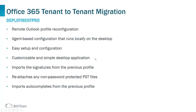The customizable desktop application is automated to recreate the Outlook profile. All users have to do is enter their credentials. You can upload your company logo for use in the Deployment Pro wizard. Enter a custom message to display in the wizard. The wizard also imports signatures from the previous profile, reattaches any non-password-protected PST files from the previous profile, and imports autocomplete entries. There are also several features you can toggle on or off.